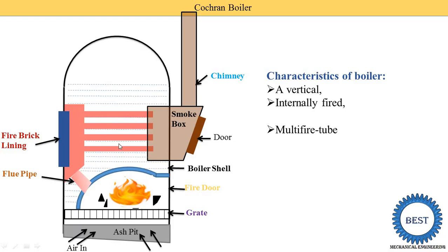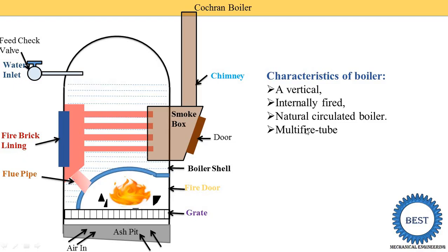Here I show the water level inside the Cochrane Boiler. The first mounting is the feed check valve — its function is to supply water into the boiler. The mass of water is controlled by this valve, and water enters the inside of the Cochrane Boiler naturally. It is known as a natural circulation boiler because no pump is used for supplying the water.